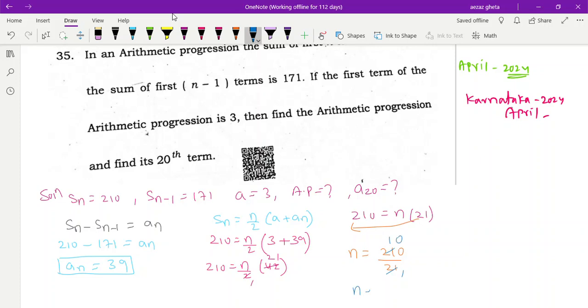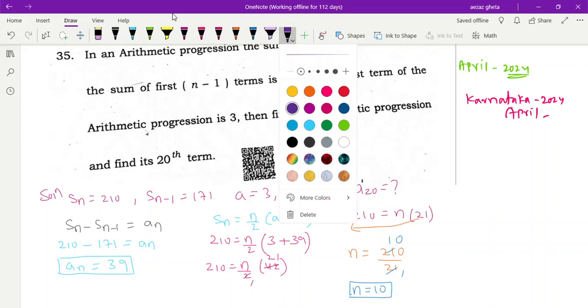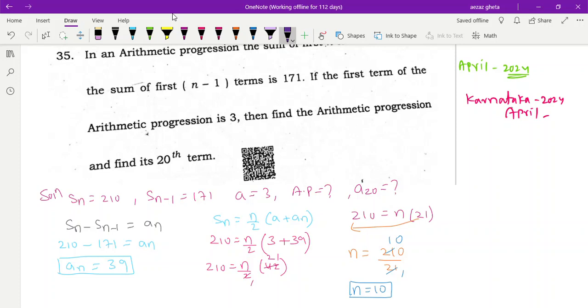n is equal to 10. Is it clear everybody? Now what we are going to do, we got to do, we got n, we have An, we can go with An is equal to a plus n minus 1 of d. An just we got it, 39, a value is 3 which is given, n is 10 minus 1 d, we will find out.